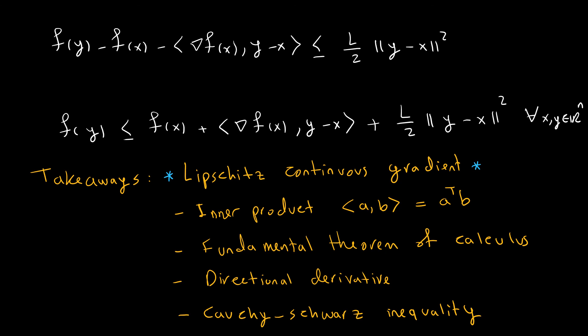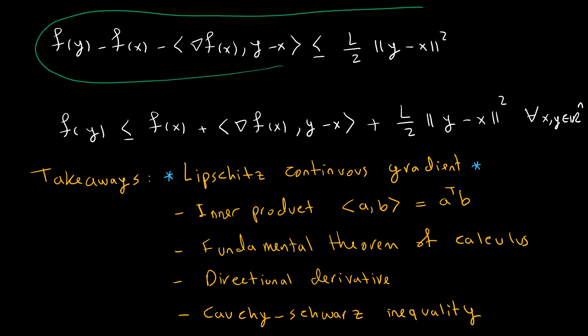We had that inequality from the previous step, and by keeping f(y) on the left-hand side and moving the other terms to the right-hand side, we get exactly what we wanted, for all points in R^n.